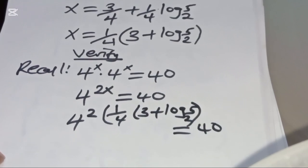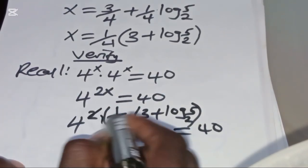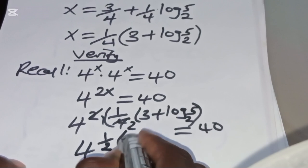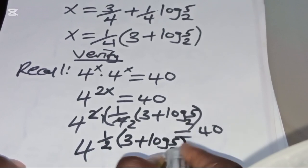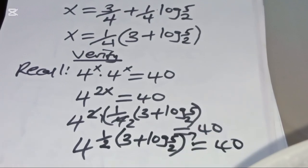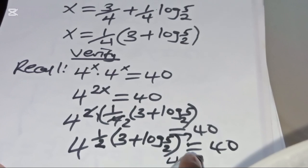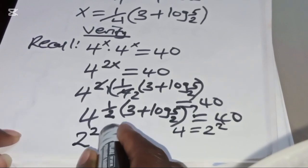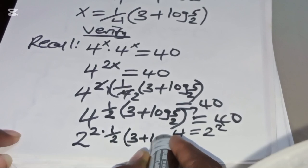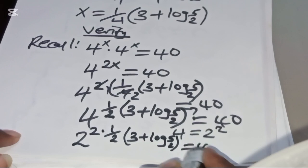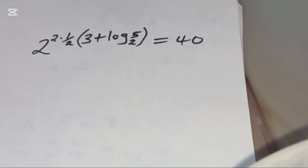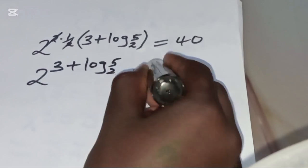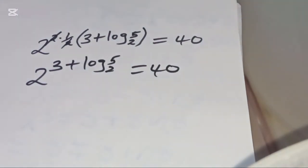Simplifying, 2 × (1/4) = 1/2, so we have 4^((1/2)(3 + log₂5)) = 40. Expressing 4 as 2², we get (2²)^((1/2)(3 + log₂5)) = 40, which simplifies to 2^(3 + log₂5) = 40.